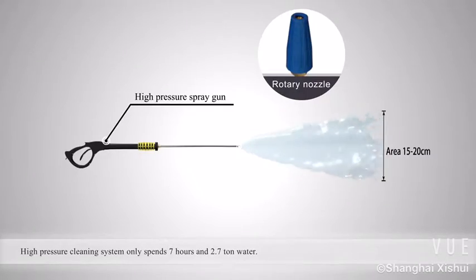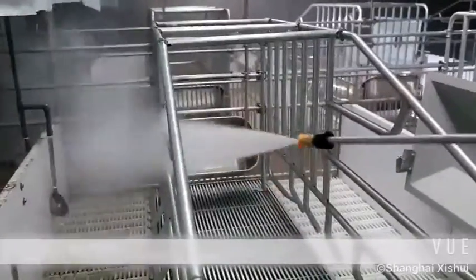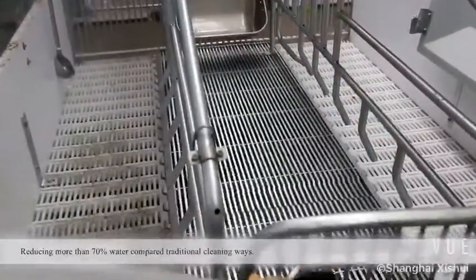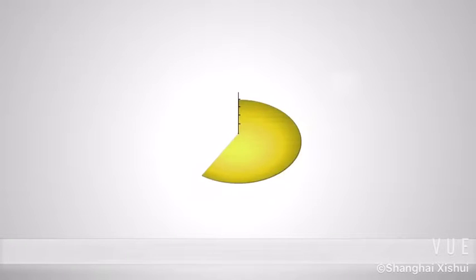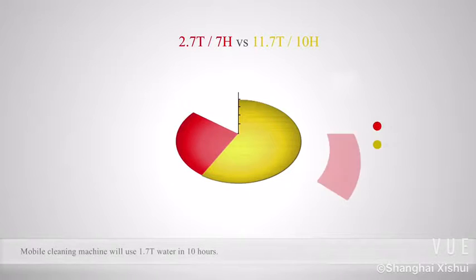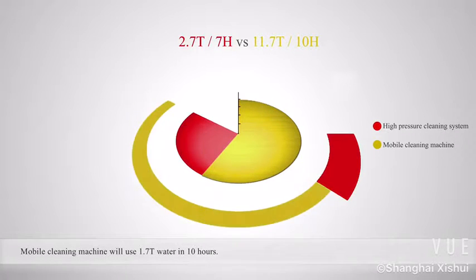Uses 2.7 ton water, reducing more than 70% water compared to traditional cleaning ways. Mobile cleaning machine uses 1.7 ton water. In total, high-pressure cleaning system will use 2.7 ton water in seven hours.